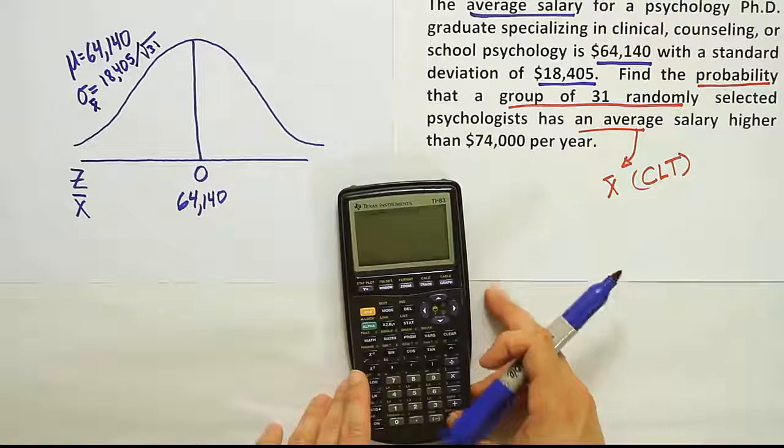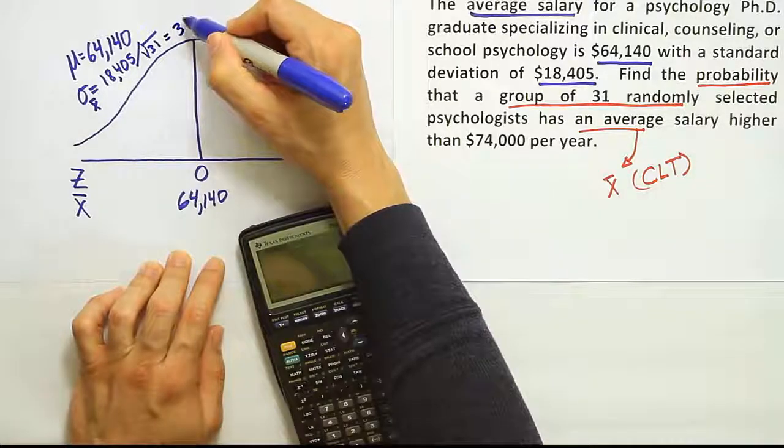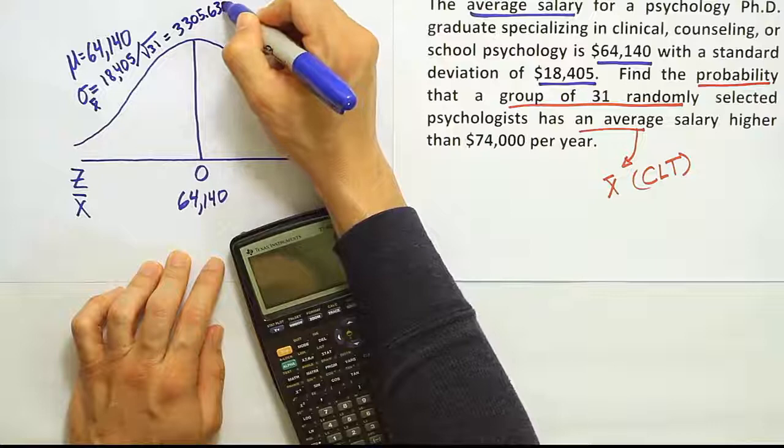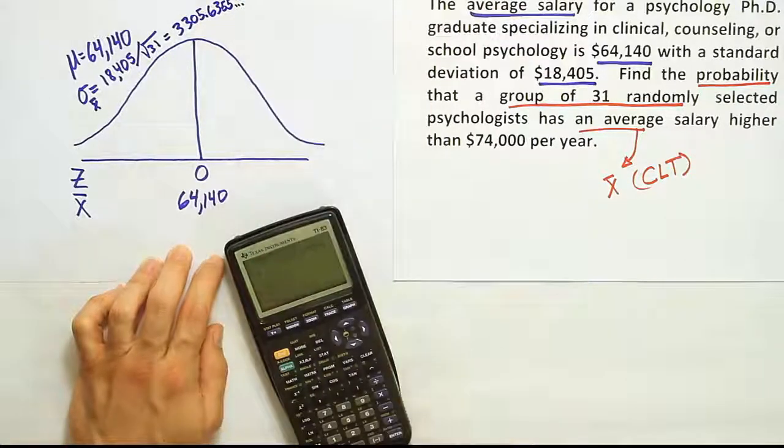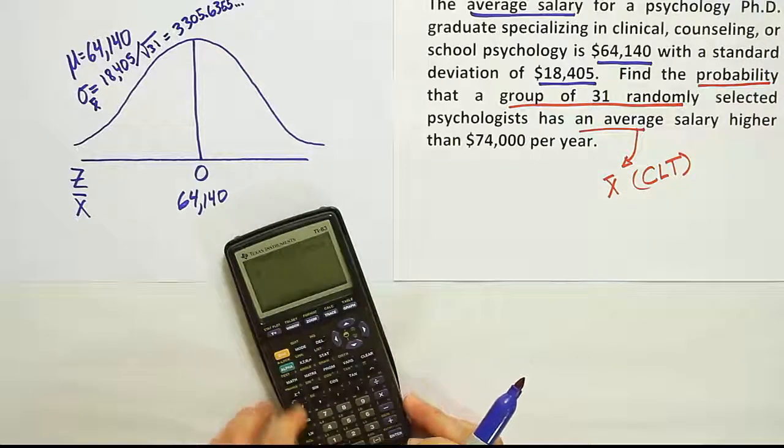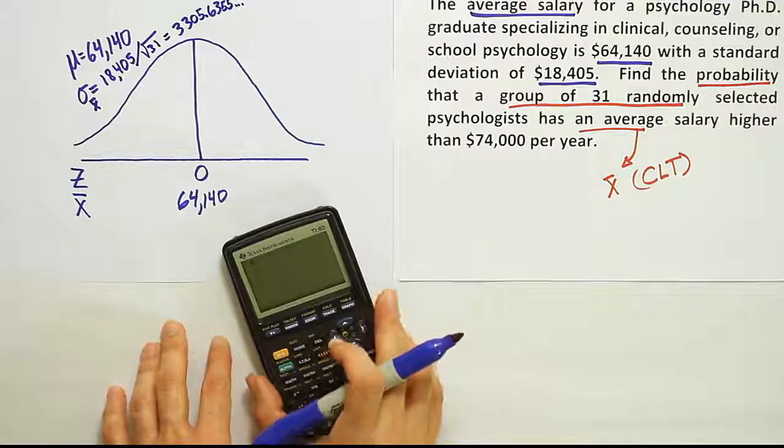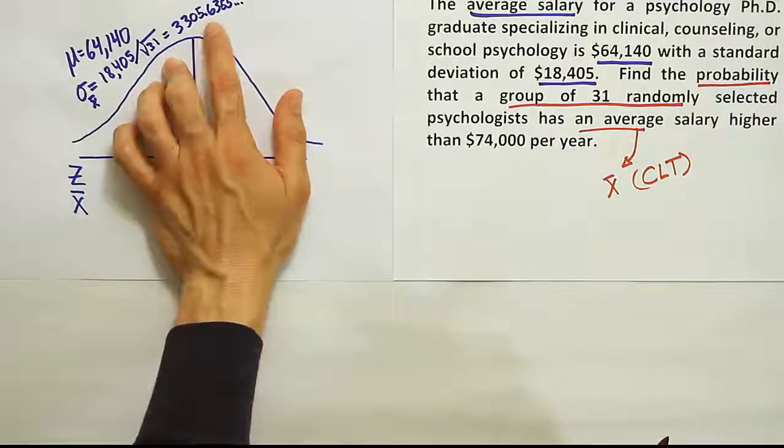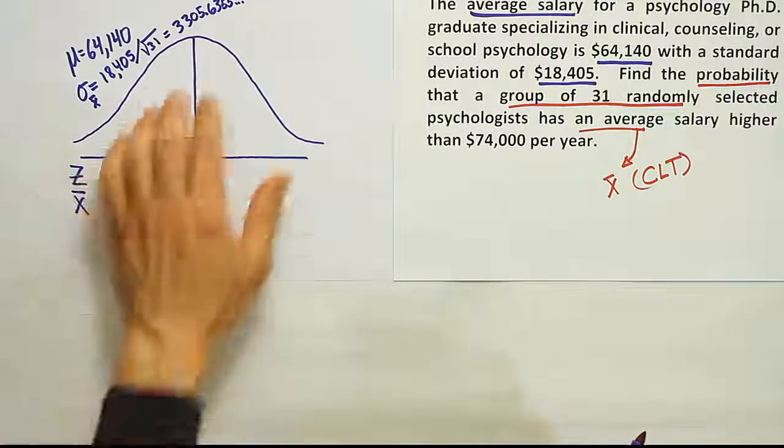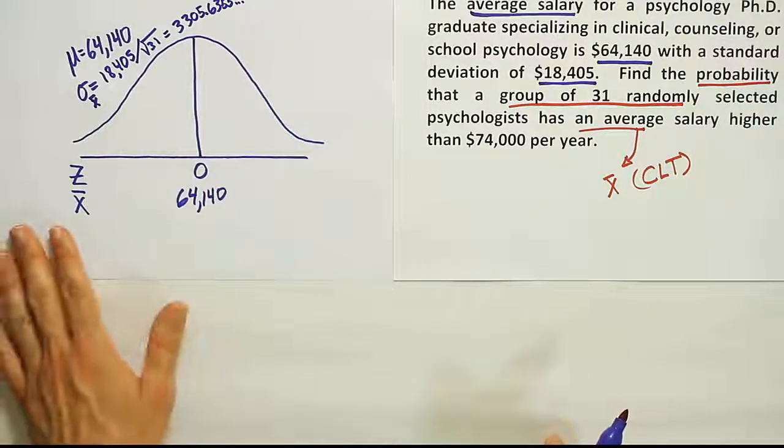And when we do that, we end up with the result of 3305.6355 dot dot dot. It goes on and on and on. I'm just going to leave it there. And what I'm actually going to do in my calculator is store it. You don't have to store it in yours. You can just use that number and type in as many decimal places as you feel are necessary. If you put in, say, for example, 0.636, you'll probably be okay and get a consistent result here. But you want to keep as many places as you can just to make sure you don't have a rounding error introduced in the problem.